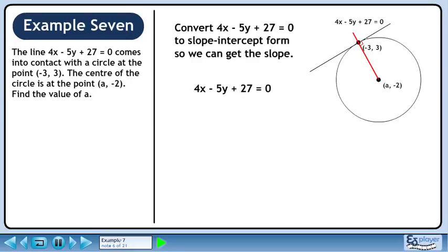Start with 4x - 5y - 27 = 0. Bring 4x and 27 to the right side, changing their signs. Divide both sides by -5 to isolate y.